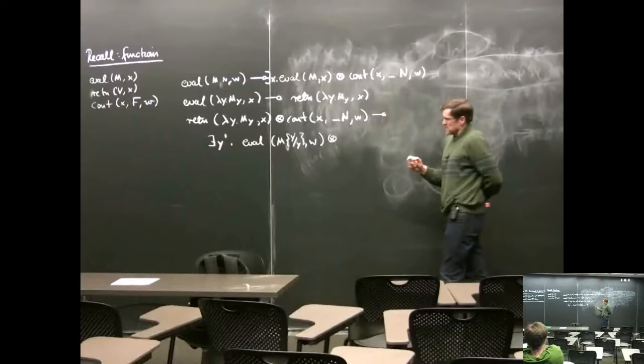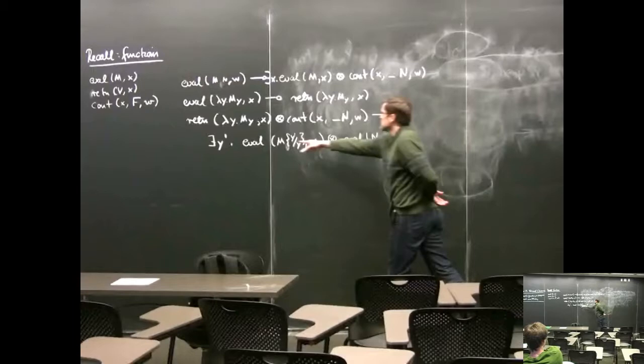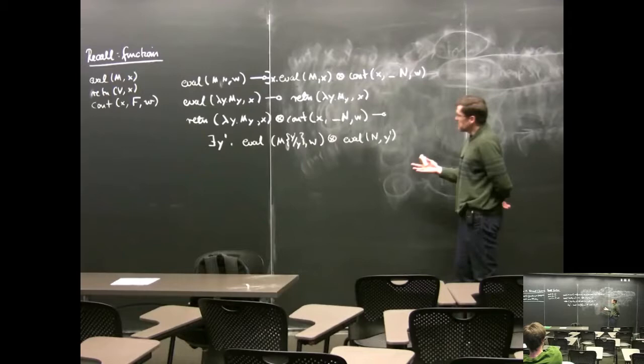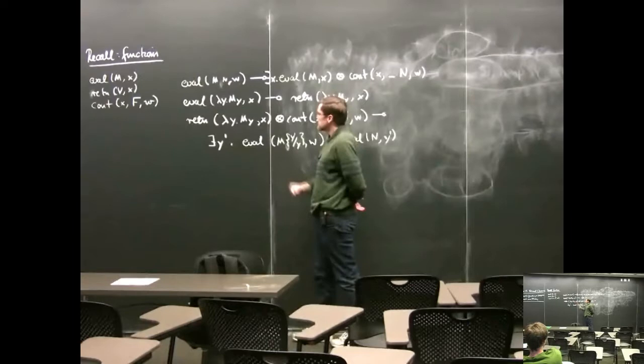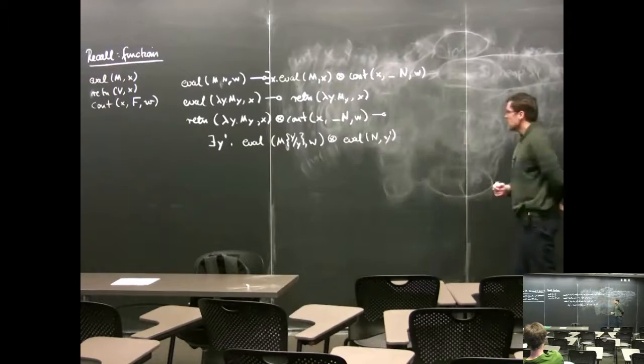And the other thing we have to do is evaluate the argument, with destination Y prime, which we communicate. So what happens is: to evaluate an application, you first evaluate the function part and leave the argument alone. Once you have that reduced to a function, you evaluate the body of the function and the argument in parallel, synchronizing on the bound variable.